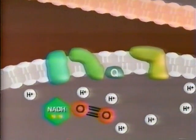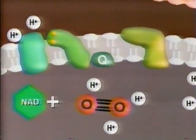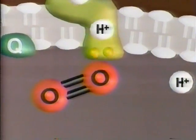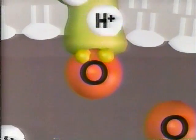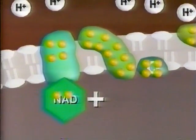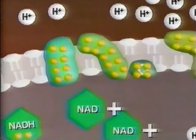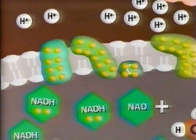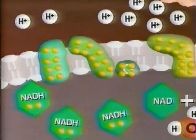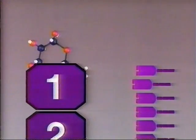The electron transport chain is the issue — remember that oxygen's main role is to remove electrons from the end of the chain. But without oxygen, the chain begins to back up. NADH is not used, and NAD+ can't be recycled. There's the rub: glycolysis needs a constant supply of NAD+ to continue the production of ATP.